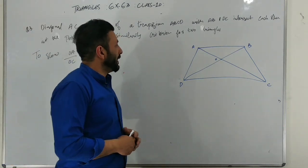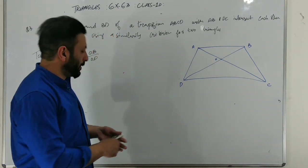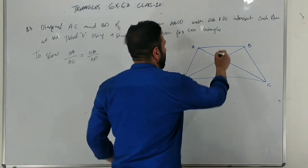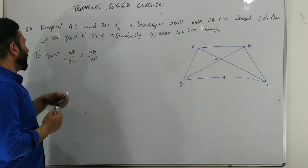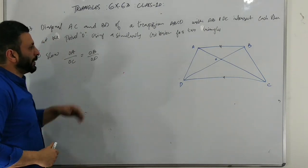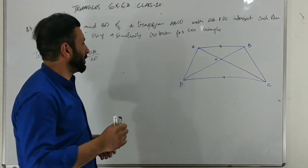There is a trapezium ABCD with AB parallel to DC. We can show OA by OC is equal to OB by OD. This is the similarity criteria.